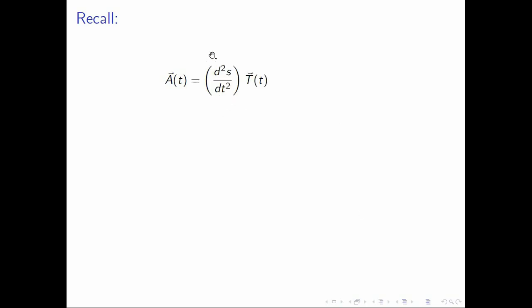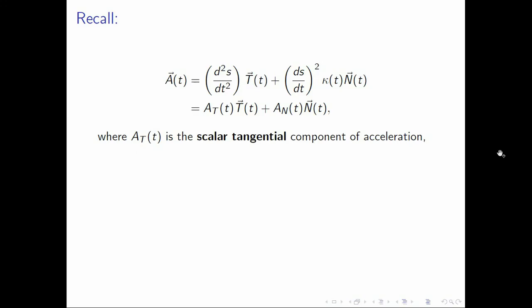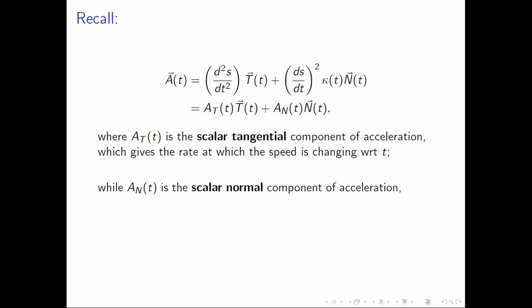We have also seen that a of t can be expressed as the sum of two products — the second derivative of the arc length times the unit tangent vector, and another term. We write this sum as a sub t of t and a sub n of t, where a sub t of t denotes the second derivative of the arc length and a sub n of t denotes the product of the square of the derivative of the arc length and the curvature. We call a sub t of t the scalar tangential component of acceleration, which gives the rate at which the speed is changing with respect to t. Meanwhile, a sub n of t is the scalar normal component of acceleration, which gives the rate at which the velocity's direction is changing with respect to t.